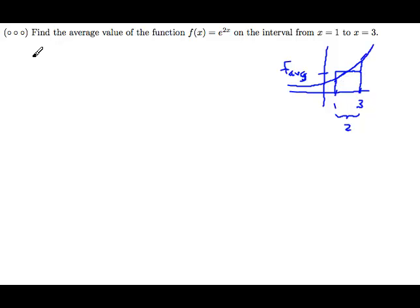So if we write all of that down, that says that the area of the rectangle, which is 2 times f average, must exactly match the area under the curve, which we know from the fundamental theorem is the integral from 1 to 3 of e to the 2x dx.